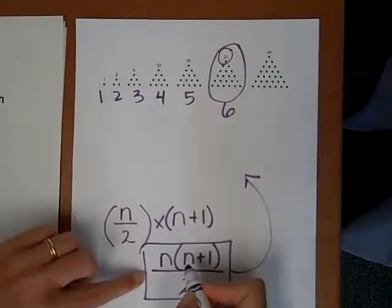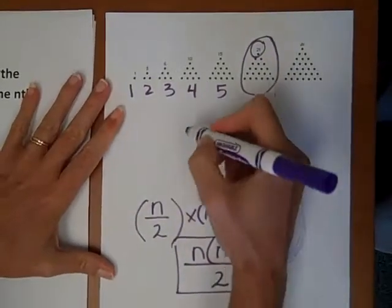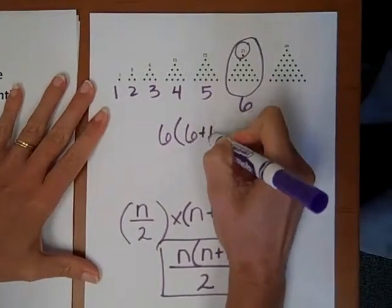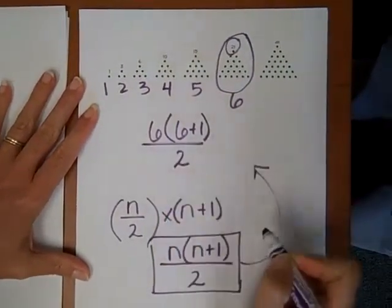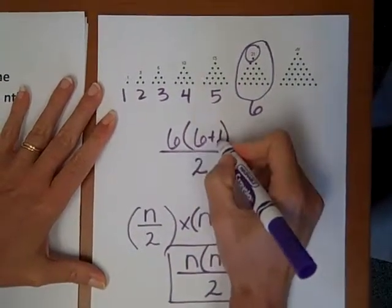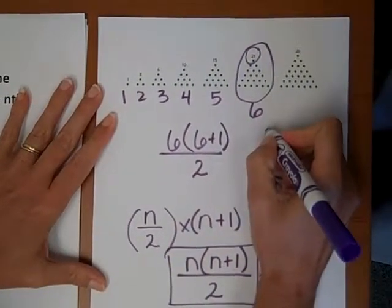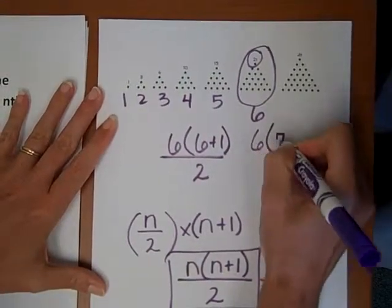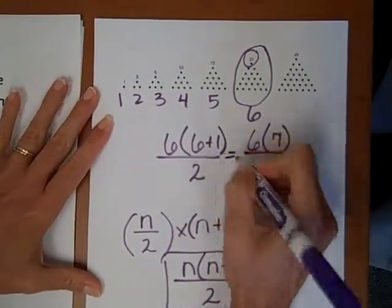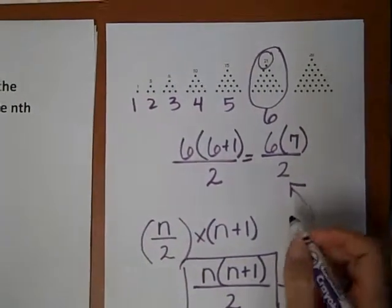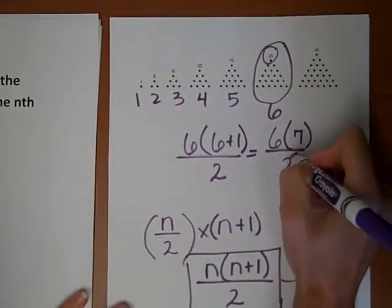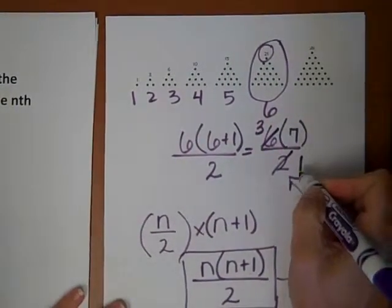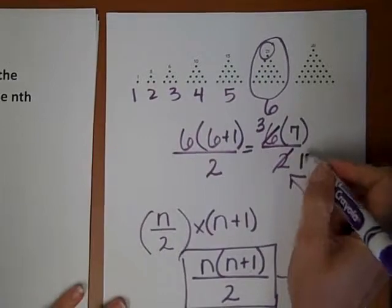So in each case, we are going to plug in six for n. So we have six times six plus one divided by two, and six plus one is seven. So we get six times seven divided by two. So now we can reduce and make this into a one, and this becomes a three right here, because six over two is the same as three over one.